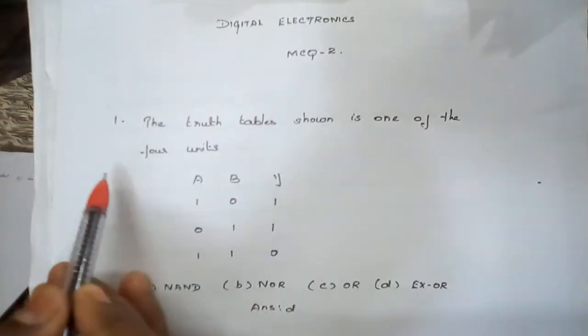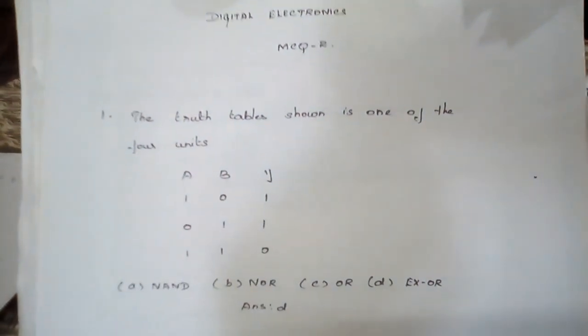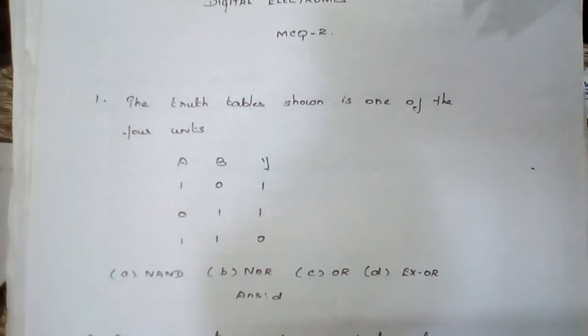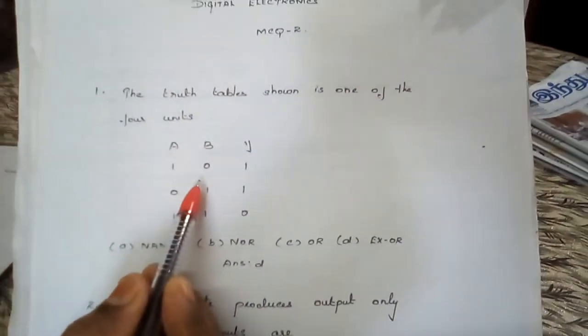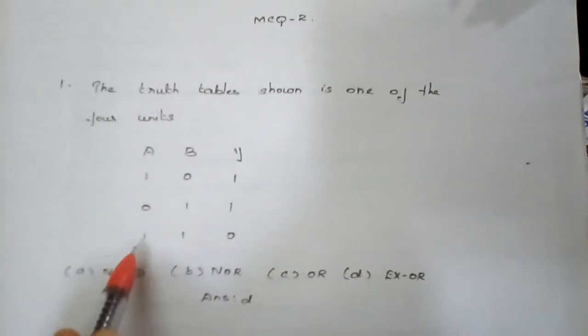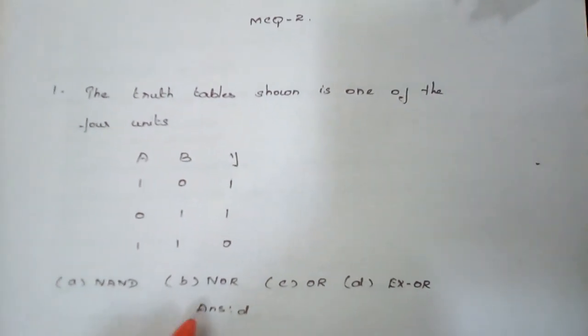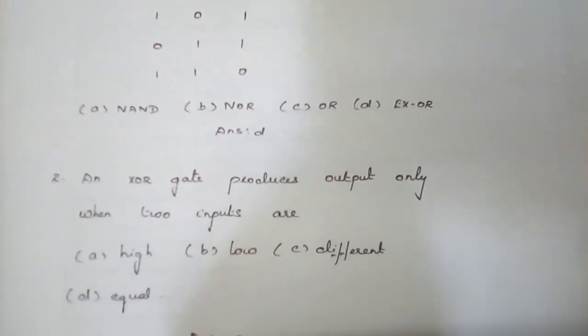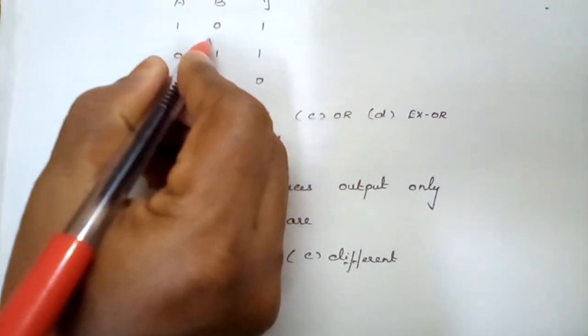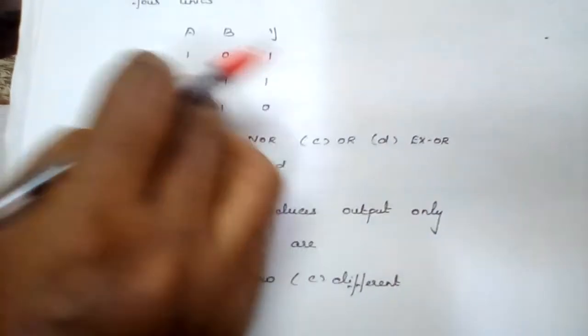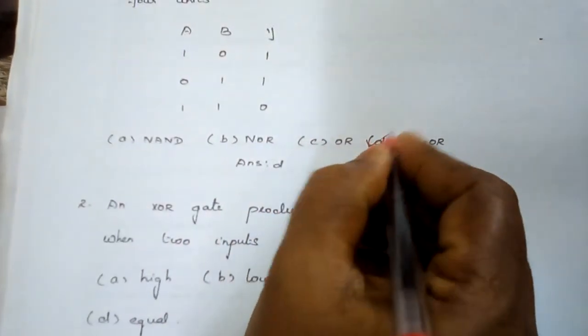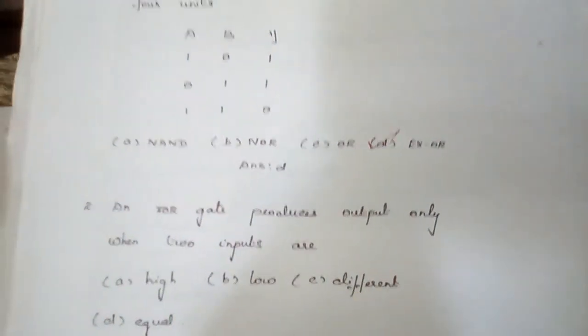Question number 1: The truth table shown belongs to one of the four gate types. The truth table has inputs A and B and output Y. When inputs are 1 and 0, output is 1; when inputs are 0 and 1, output is 1; when inputs are 1 and 1, output is 0. The options given are AND, NOR, OR, and XOR. By analyzing this truth table, we know that when two inputs are dissimilar, we have output 1. This is the case of the XOR gate. So the answer for question number 1 is XOR gate.